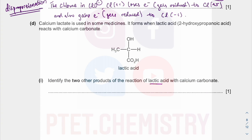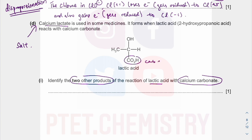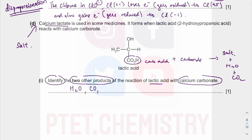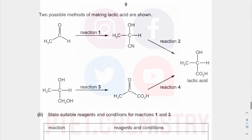When you have lactic acid with calcium carbonate, you need to identify two other products. You can get the calcium lactate, which is the salt — obviously these are carboxylic acids, they behave just like acids. When you react with carbonate, you will get the salt, which is calcium lactate, plus H2O plus CO2. They say identify, not name and not formula, so I'm happy to just write down the correct formula.